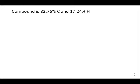We know that it's 82.76% carbon and 17.24% hydrogen. If we assume a 100-gram sample, that will make the following math very easy. In a 100-gram sample, we'll have 82.76 grams of carbon and 17.24 grams of hydrogen.